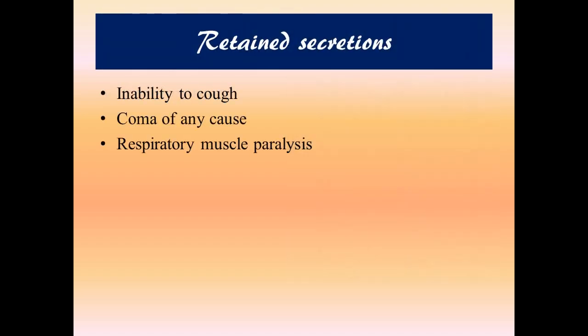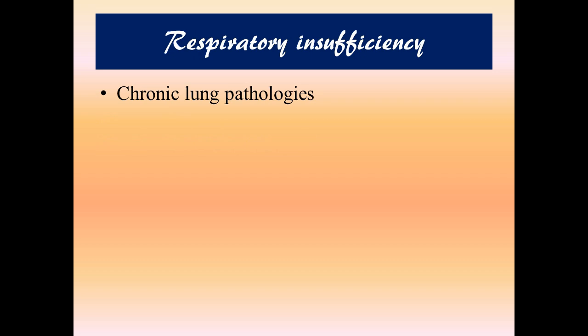The second classification is retained secretions. These patients don't have the ability to cough out secretions. Comatose patients or patients with respiratory muscle paralysis fall into this category. The third classification is respiratory insufficiency, where patients with chronic lung pathologies are included.